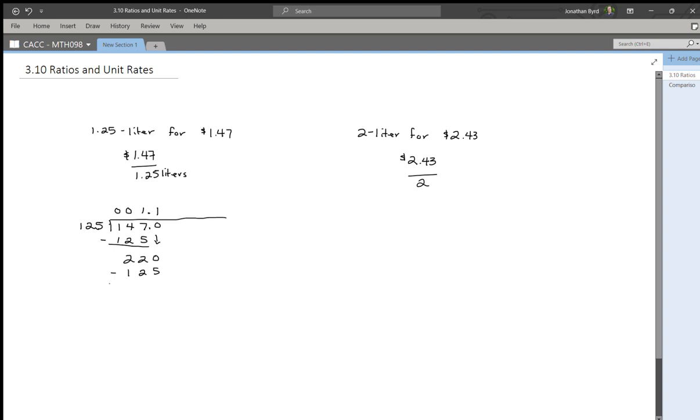125 goes into 220 one time. So I'll write that down. One times 125 is 125. Subtract 125 from 220, and I will get 95, and then bring down another zero. Now 125 goes into 950 seven times, I think, because seven times 125 is 875.